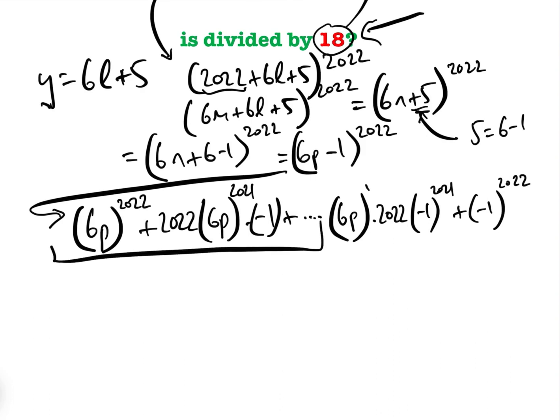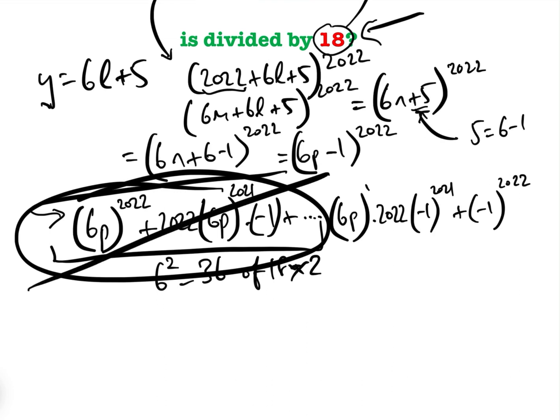And we're looking for which bits of this are divisible by 18. Well, let's have a look at all of these terms here. They will have at least 6^2, which is 36, as a factor. And 36 is a multiple of 18. It's 18 × 2. And so therefore, clearly, all of this lot are multiples of 18. So we don't need to bother with them.